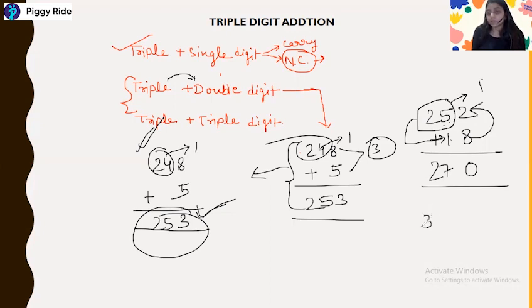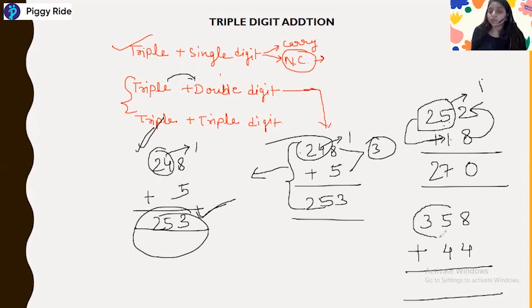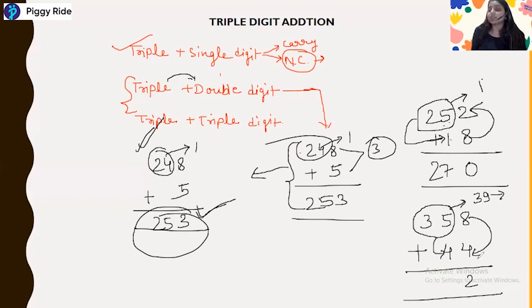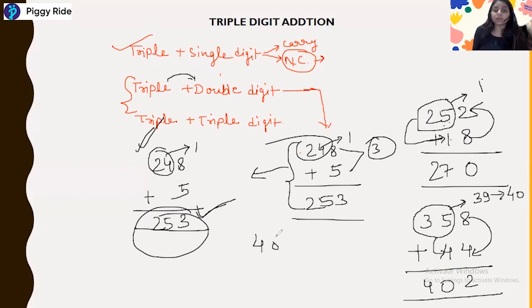Next question: 358 plus 44. Take the leftmost two digits: 35. The end number here is 2, since these are carry numbers. Now 35 plus 4 is 39, and we increase 39 by 1 because we have a carry, giving 40. So the answer is 402.